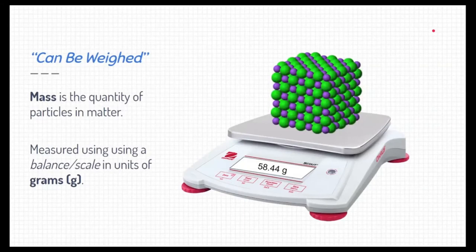I want to delve further into our two statements, can be weighed. Scientifically, when we weigh something, we should be looking for its mass or the quantity of particles of matter. We can mass out matter by measuring it using a digital balance or regular balance or a scale, and typically we measure it in units of grams.